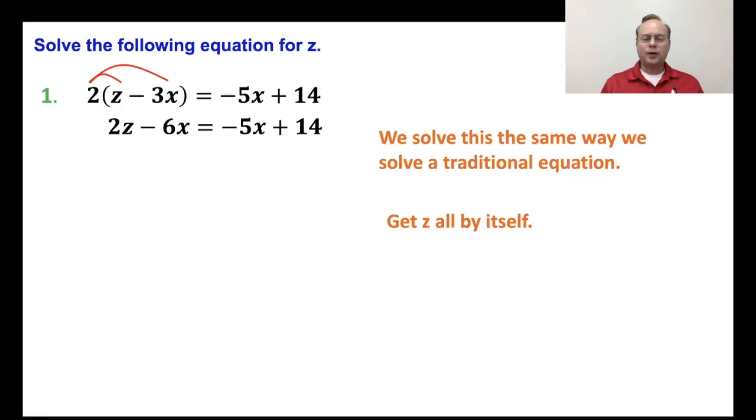Now we've got that 2z minus 6x. Now what I need to do is just get z all by itself. So I need to get rid of everything else. Anything that's on the left side of the equation here, I'm going to try to get rid of it and move it over to the right side. This negative 6x, I need to get rid of that. To cancel that out, the opposite of negative 6x would be a positive 6x. So I'm going to add 6x to both sides.